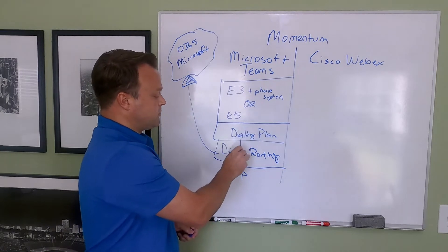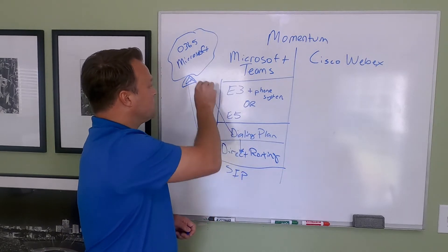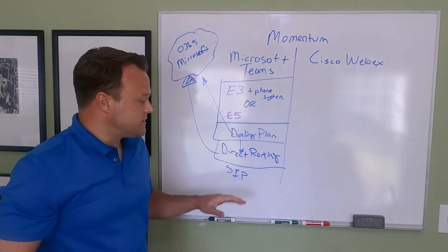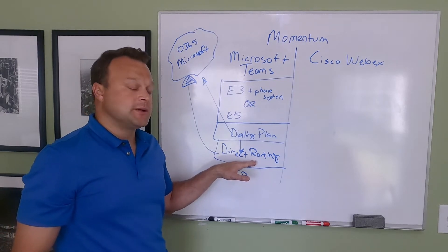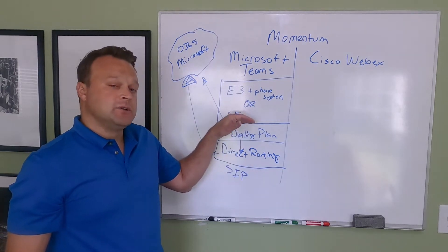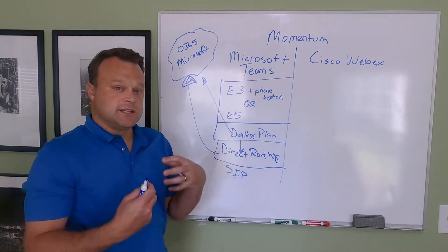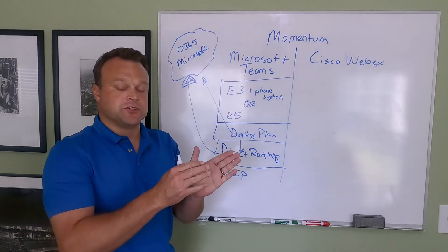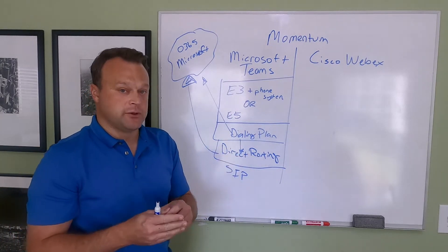So the dialing plan, you can go Direct Routing, or you can go directly to Microsoft. We suggest go with a provider like Momentum to where if something were to happen to Microsoft, we have your telephone numbers, and we can swing those numbers, send those calls elsewhere.